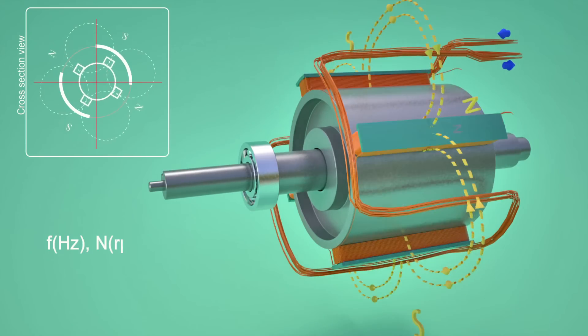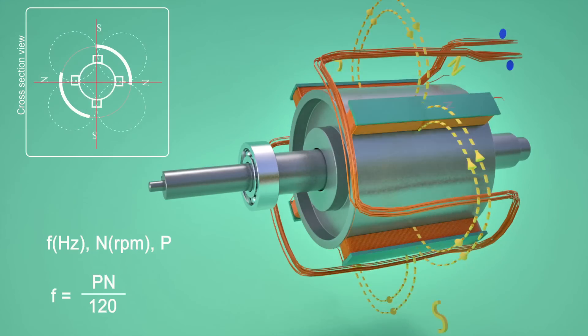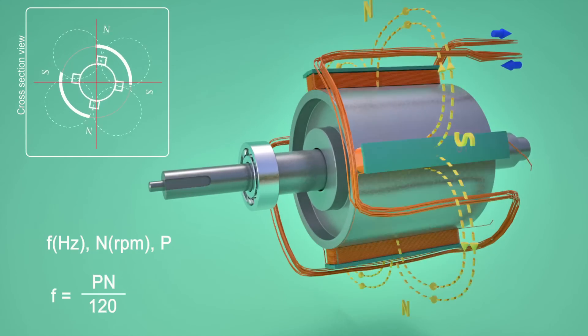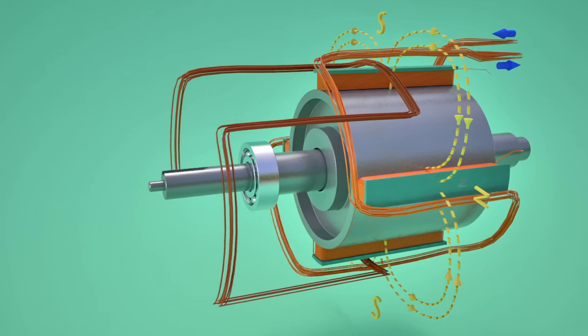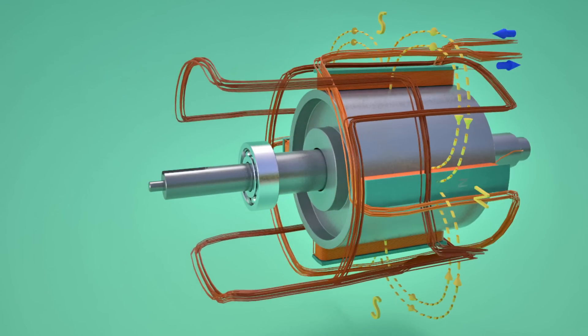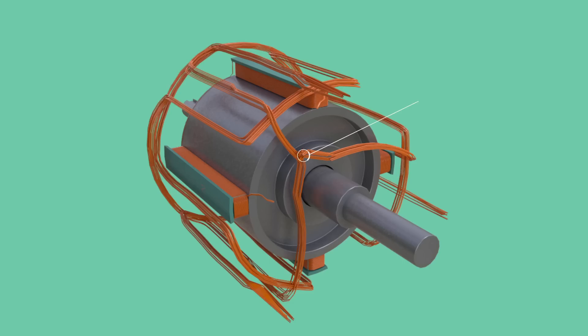It is clear from this relationship that frequency of electricity produced is synchronized with mechanical rotational speed. For producing three phase AC current, two more such armature coils which are in 120 degree phase difference with the first is put in the stator winding.